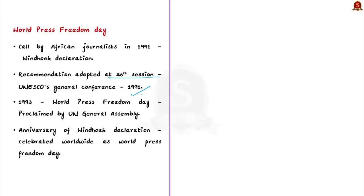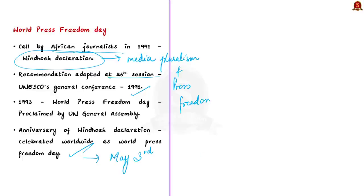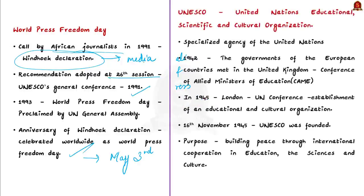In 1993, the World Press Freedom Day was proclaimed by the UN General Assembly. Since then, the anniversary of the Windhoek Declaration is celebrated worldwide as World Press Freedom Day, falling on May 3rd every year. Just remember that the Windhoek Declaration is related to press freedom. In this regard, let us also briefly see about UNESCO. UNESCO stands for the United Nations Educational, Scientific and Cultural Organization — a Specialized Agency of the United Nations.